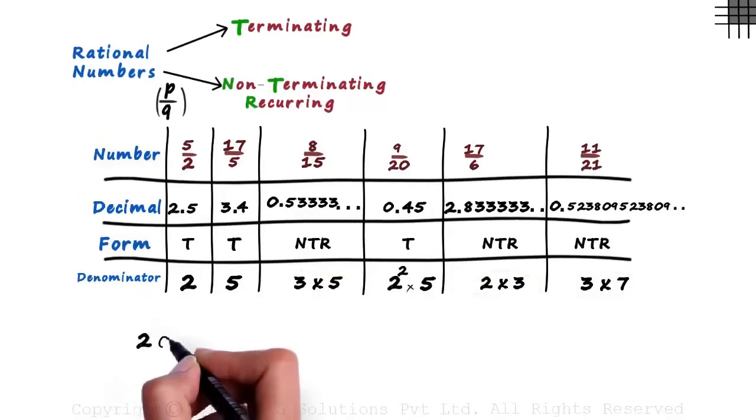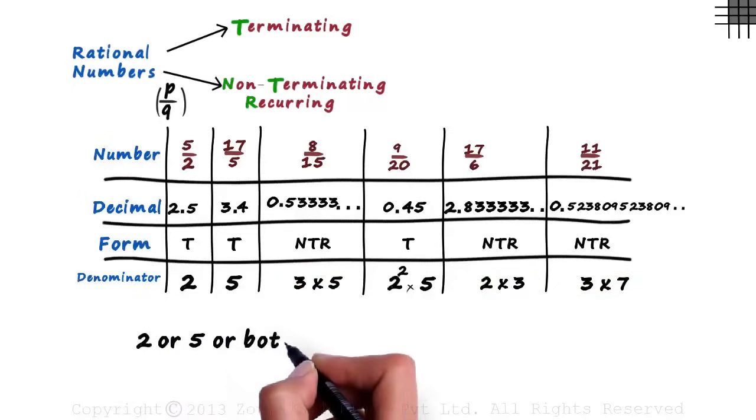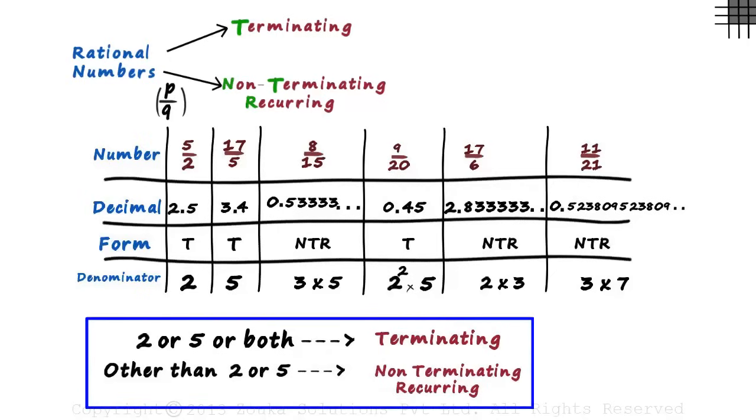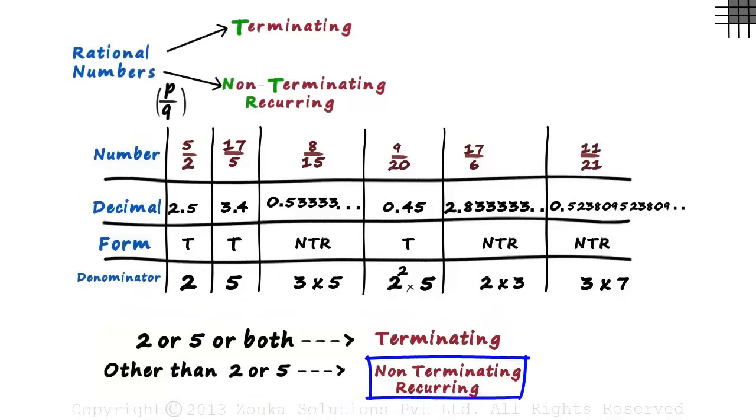If the prime factors of the denominator are 2 or 5 or both, then the decimal is terminating. If the denominator contains any prime factor other than 2 or 5, then it's a non-terminating recurring decimal. These are the only two rules you need to remember. Have you noticed how simple it is to know if the decimal is terminating or non-terminating recurring? All we have to do is write the denominators in terms of its prime factors and apply these rules.